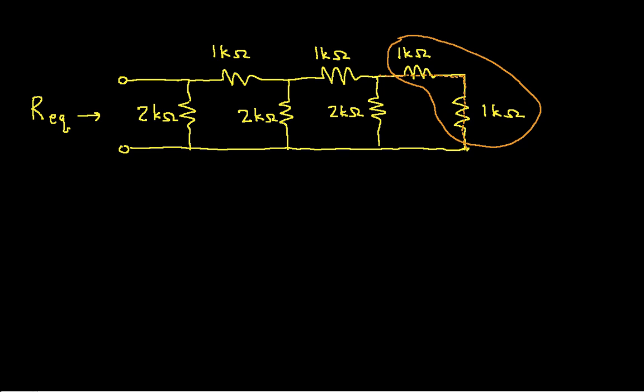So since these are series resistors, we have then that the equivalent resistance is going to be 1k ohm plus 1k ohm, which is 2k ohms. So what this means now is that from the point of view of everything else in the circuit, which for right now would be everything except these two 1k ohm resistors that I have circled in orange, I can replace these two 1k ohm resistors with a single 2k ohm resistor. So let's do that.